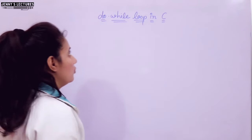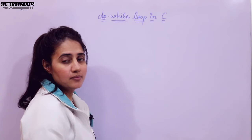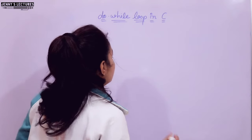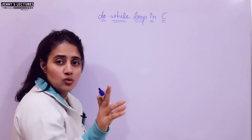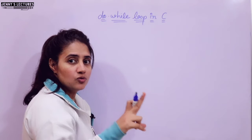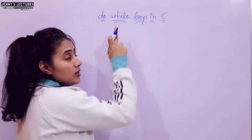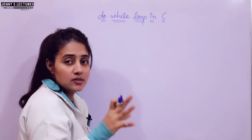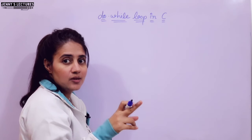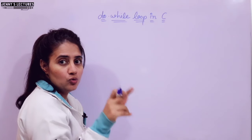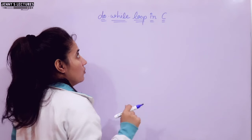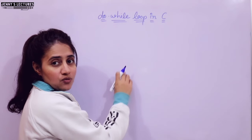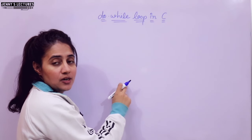Let us discuss the do-while loop. It is almost the same as while loop, but we will see what the difference is. As you know, while loop and for loop are entry controlled loops. This is what an exit controlled loop means — while we are exiting from the loop, at that time the condition would be checked.